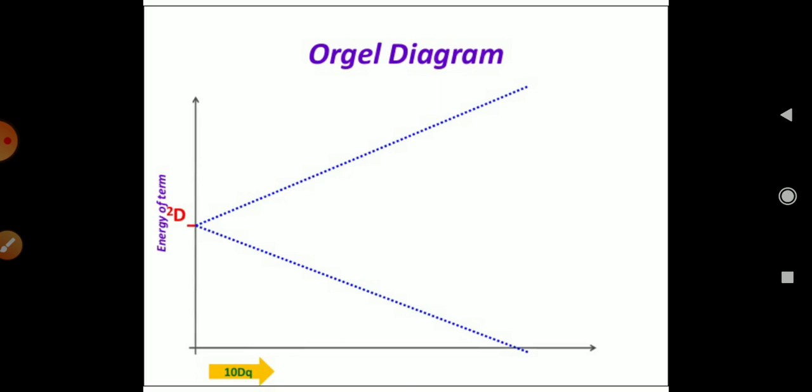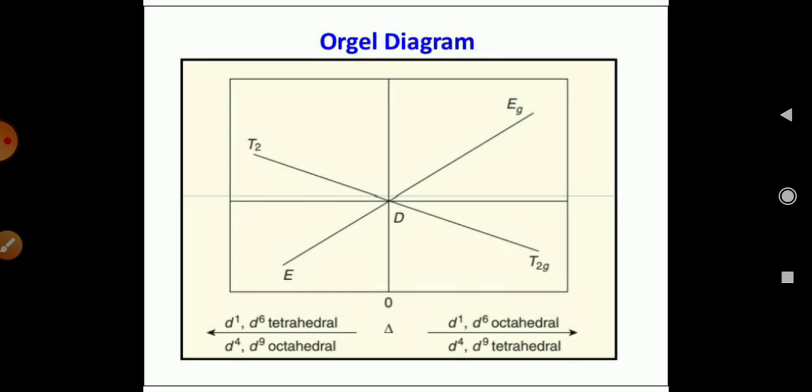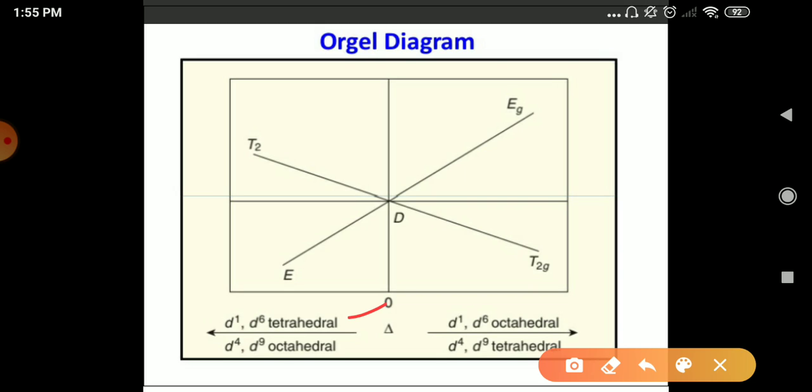And 2D term symbol is for D1 and D9 configuration. And here you can see the NDQ energy. So, this is the energy diagram of D1, D6 tetrahedral and D4, D9 tetrahedral.